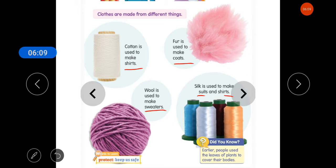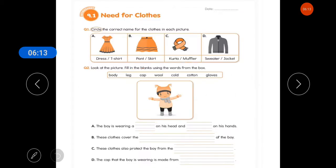Students, I hope the lesson is clear to you all. Now, it's time for the worksheet 9.1. First question is, the name of our worksheet is need for clothes. And first question is, circle the correct name for the clothes in each picture. Like, what is the name of this picture?